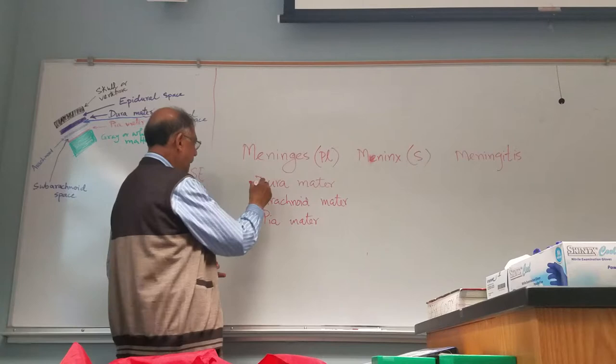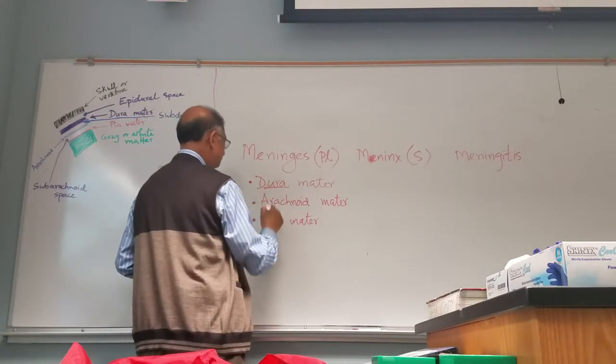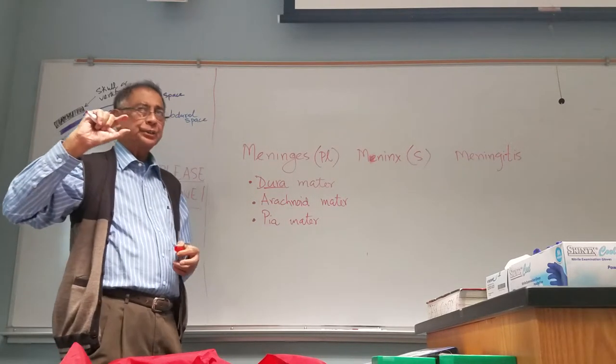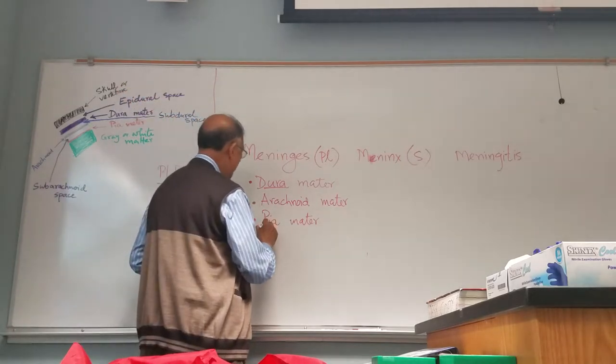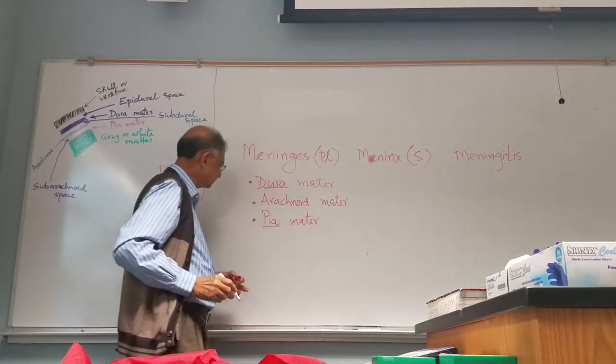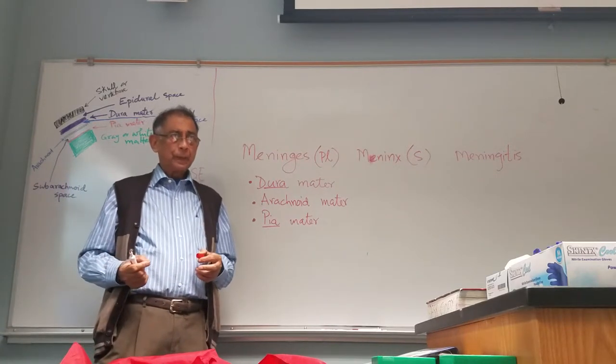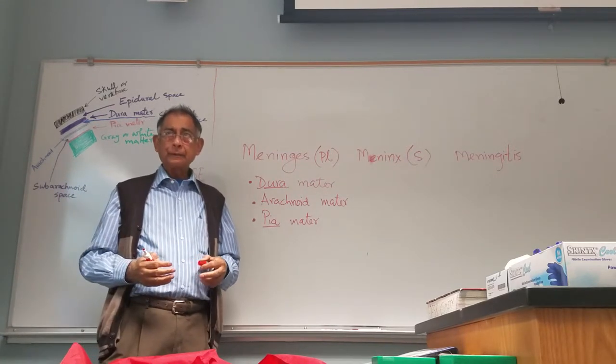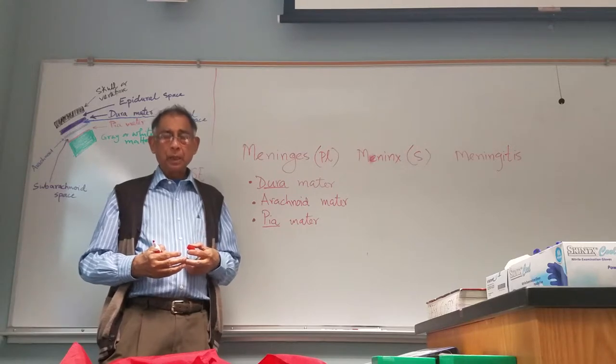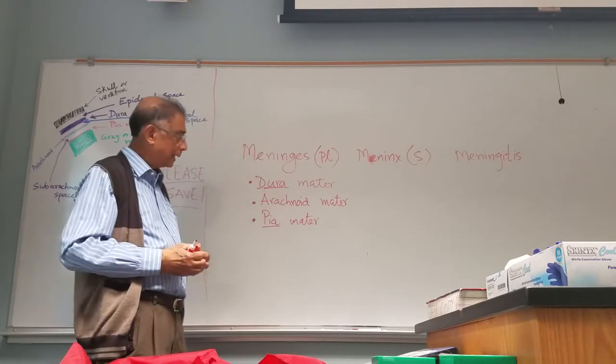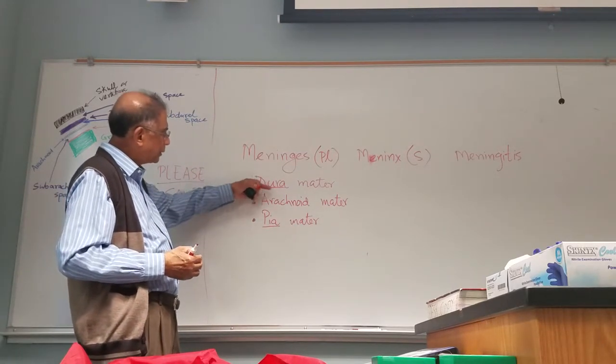Dura means tough. Outer covering is tough. Pia means delicate, the most delicate layer, which is vascularized, richly supplied with blood vessels. And in between, sandwiched between the two, is the arachnoid.